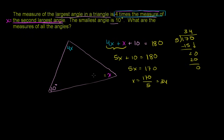So the second largest angle has a measure of 34 degrees. The largest angle is 4 times that: 4 times 34 is 120 plus 16, which is 136 degrees. So we're done — the three angles are 10 degrees, 34 degrees, and 136 degrees.